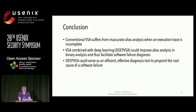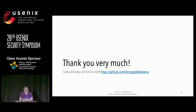To conclude this talk, conventional VSA suffers from inaccurate alias analysis when the execution trace is incomplete. VSA combined with deep learning can improve alias analysis in binary analysis and thus facilitate software failure diagnosis. DeepVSA could serve as an efficient and effective diagnosis tool to pinpoint the root cause of a software failure. Our code, data, and model are published at the provided link. Thank you all for your attention. I'm now ready for questions.